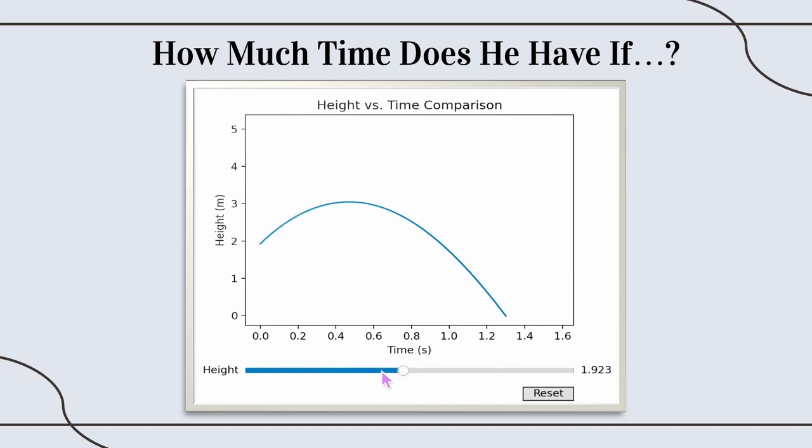Whereas, if the object was released at Fritz's height of 0.8 meters, the fall time would drop to 1.1 seconds, allowing him less time to react.